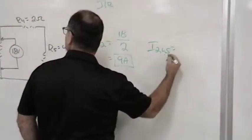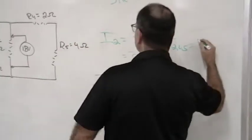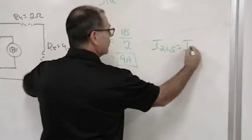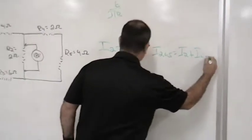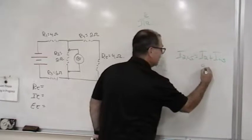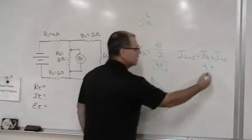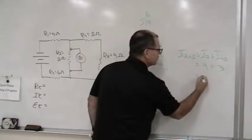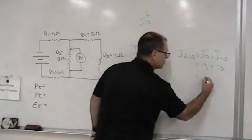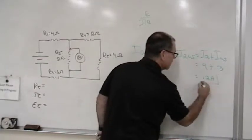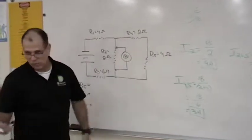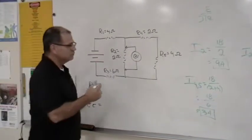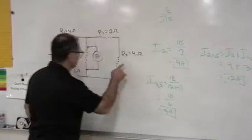You just add up the current. So in this case, the current across 2, 4, and 5 is equal to, I'll write the formula down, I2 plus I4,5. So we got a total of 9 plus 3. So 9, 10, 11, 12.